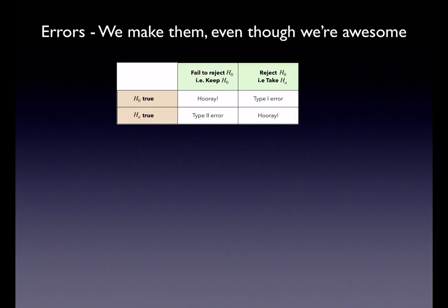When we run a hypothesis test, there are always four outcomes. If the null is true and we keep it, that's a good thing. If the null is true and we reject it, that's a bad thing — that's a type one error. If the alternate is true and we keep the null, that's a bad thing — that's a type two error. But if the alternate is true and we take the alternate, that's a good thing. So we want to parse out the type one and type two errors.